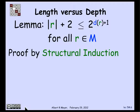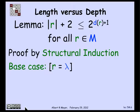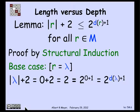Let's prove a property of the depth of strings in m: that the length of a string r plus 2 is less than or equal to 2 to the power of depth of r plus 1, for all strings r of matched brackets. We prove this by structural induction. For the base case — the empty string — the length is 0, so length plus 2 equals 2, which equals 2 to the 0+1, equal to 2 to the depth of the empty string plus 1. The inequality holds as an equality.